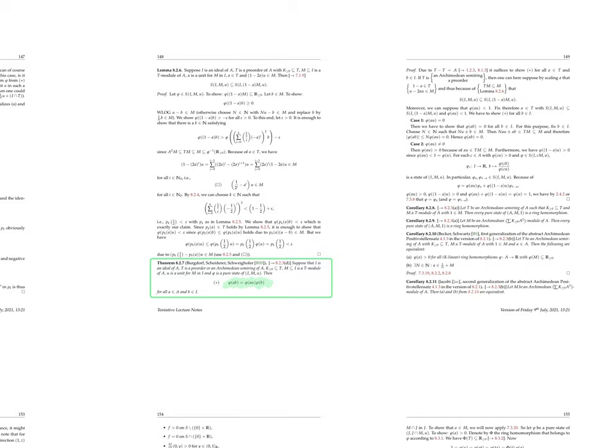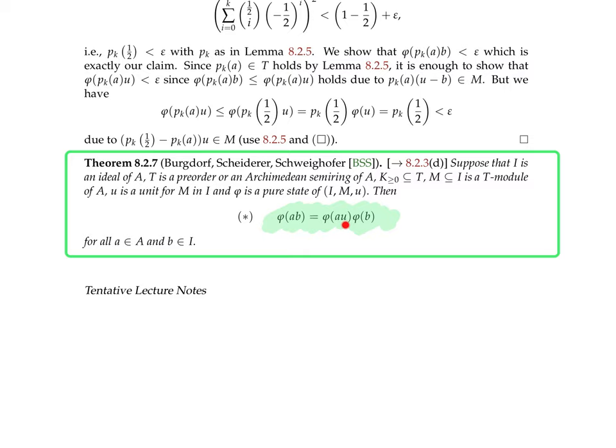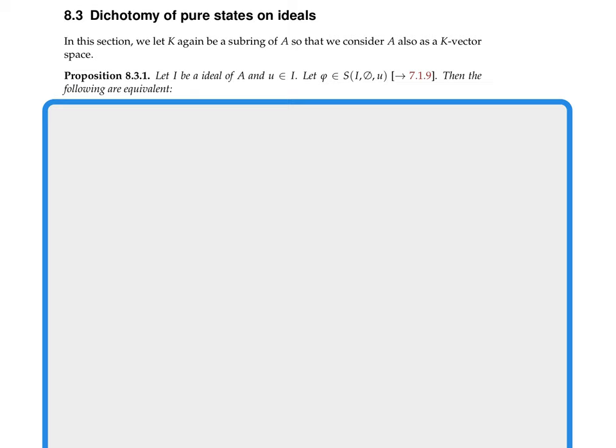The exact conditions are: if T is a preorder or an archimedean semiring of A, and M is a T-module contained in I, and no negative elements from k are contained in T, and u is a unit for M and I, and φ is a pure state of (I, M, u) — that means an extreme point of the convex set of all states — then we have condition star. This is a very important condition which we have been investigating only in very special cases up to now, essentially when u was 1.